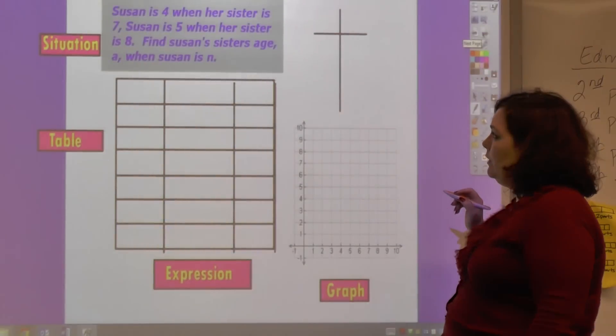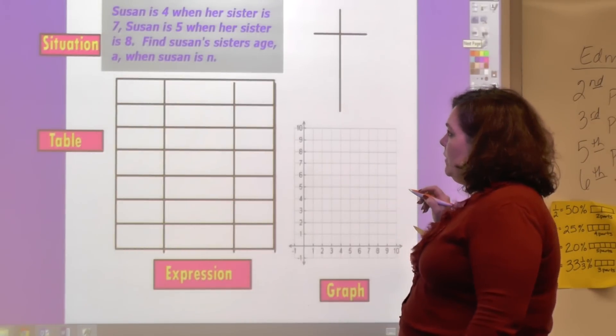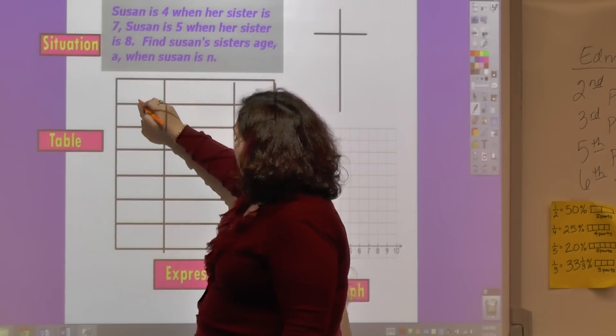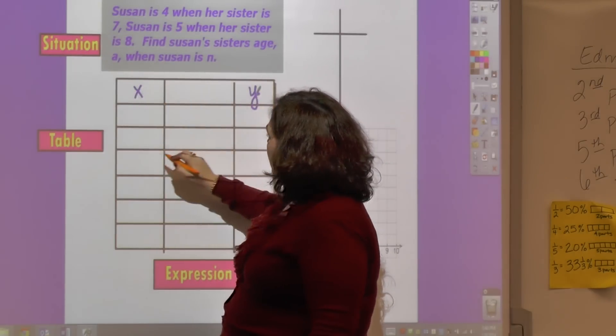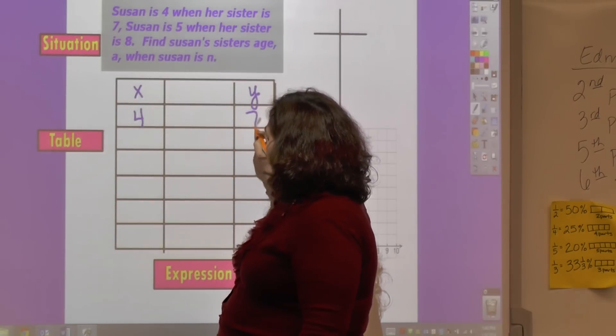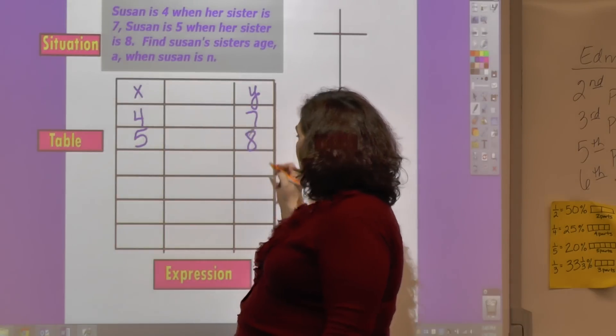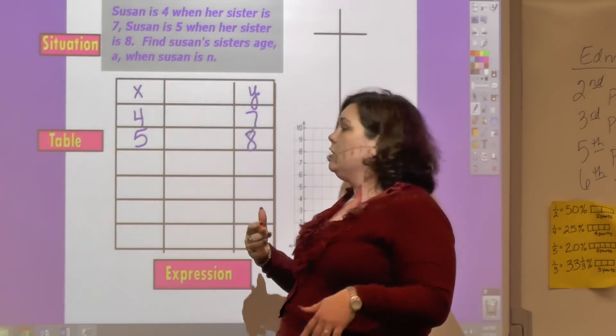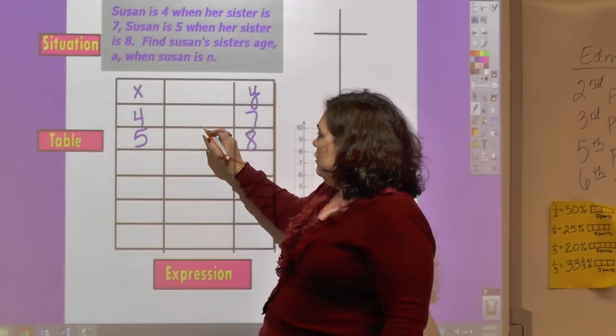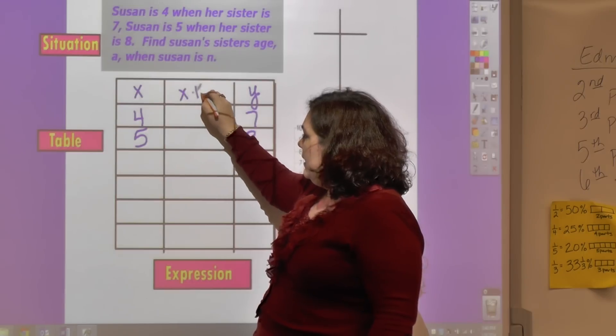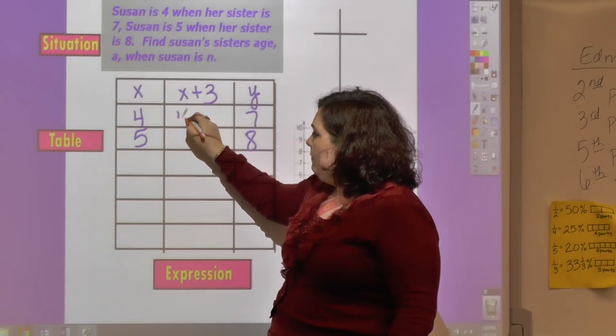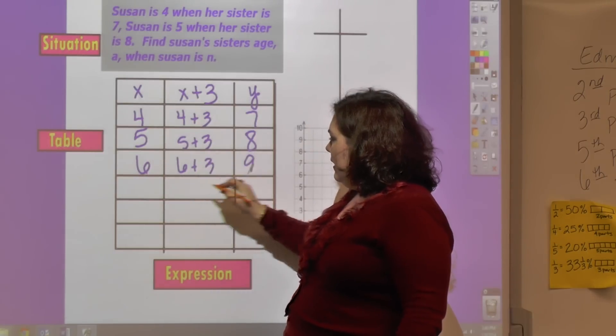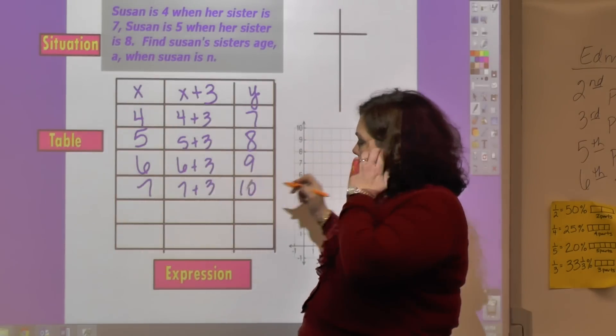Let's look at another situation. Susan is four when her sister is seven. Susan is five when her sister is eight. So this is X and this is Y. Susan is four when her sister is seven, and Susan is five when her sister is eight. So we're just going up by one. This is going to be adding because the difference between the ages always stays the same. So it's going to be X plus three. This is four plus three, and this is five plus three, and then six plus three, and seven plus three.